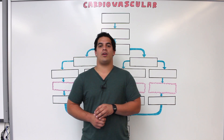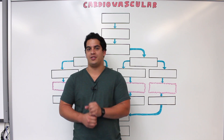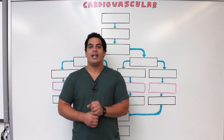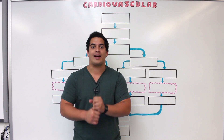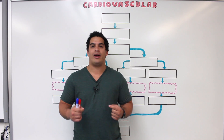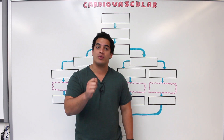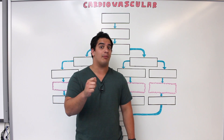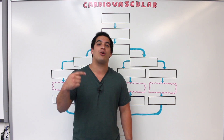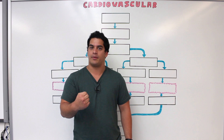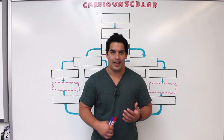In this video we're going to talk about the coronary circulation. The coronary circulation is very important — it is the circulation that provides oxygenated blood to the myocardium of the heart. The coronary circulation is one of the most important circulations within the body because it is supplying oxygenated blood to the myocardium, the muscle of the heart.